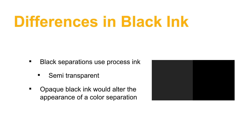Another thing to consider with black ink is that process inks — and this goes for all process colors — are semi-transparent. In order for them to function, some of the light has to pass through them, hit the paper, and reflect back. An opaque black ink would not work properly. Sometimes you might want to use a very opaque ink for its appearance in text, but that would be detrimental to the print quality for color images like a photograph.